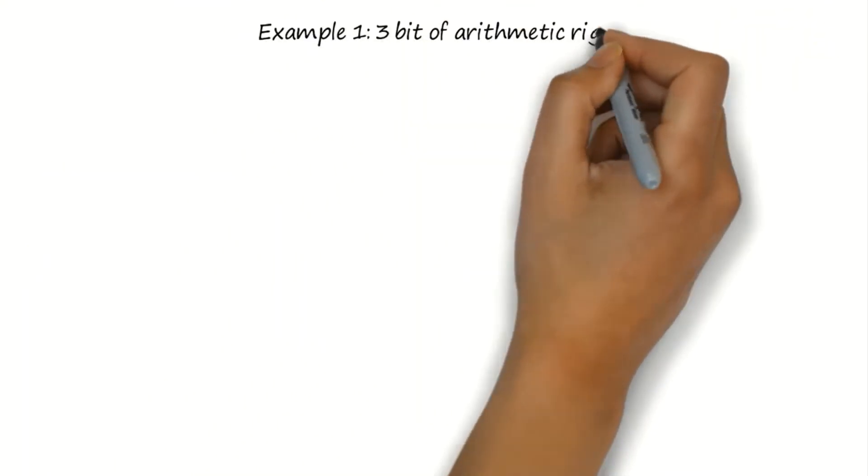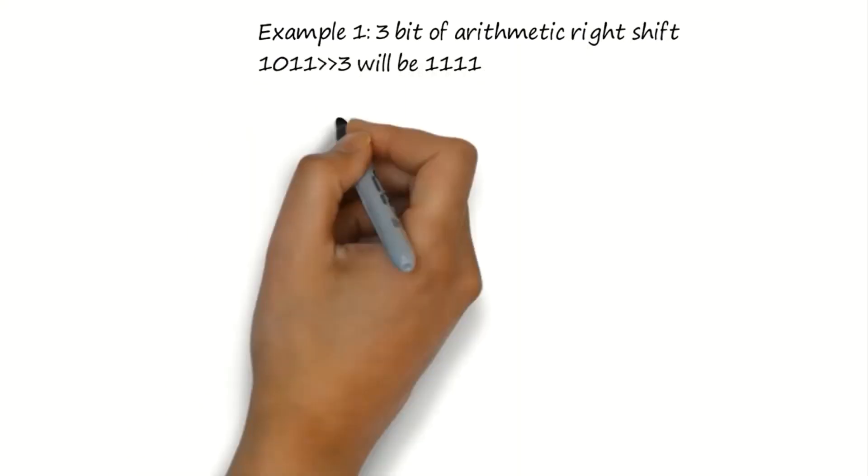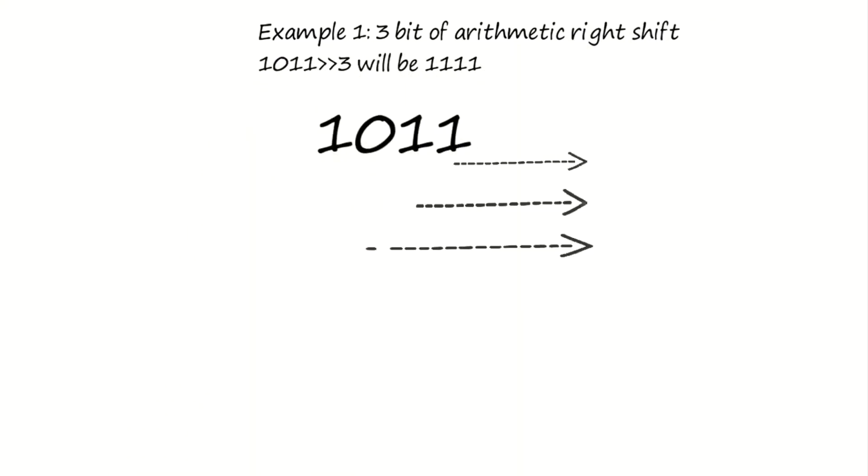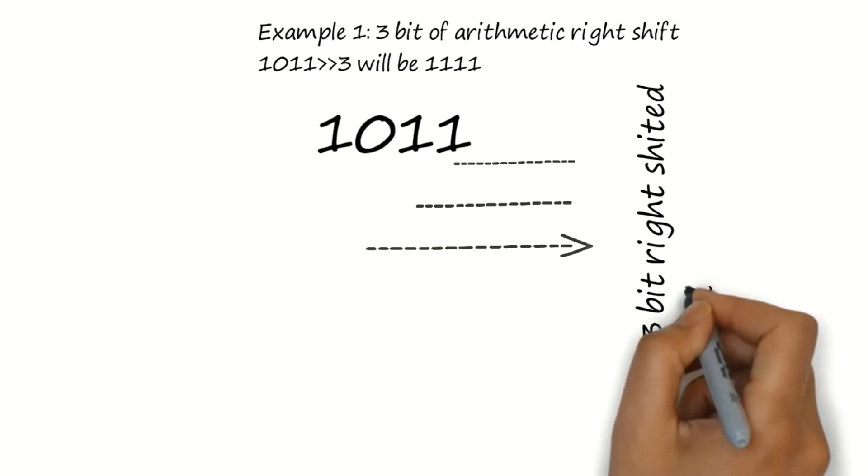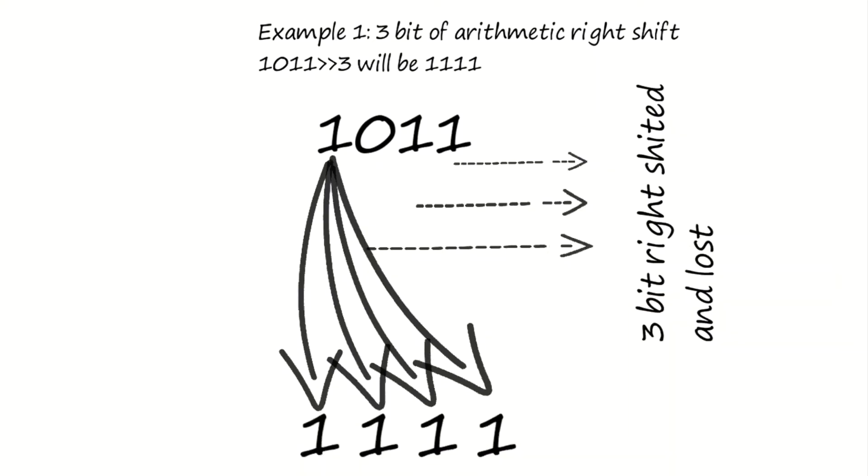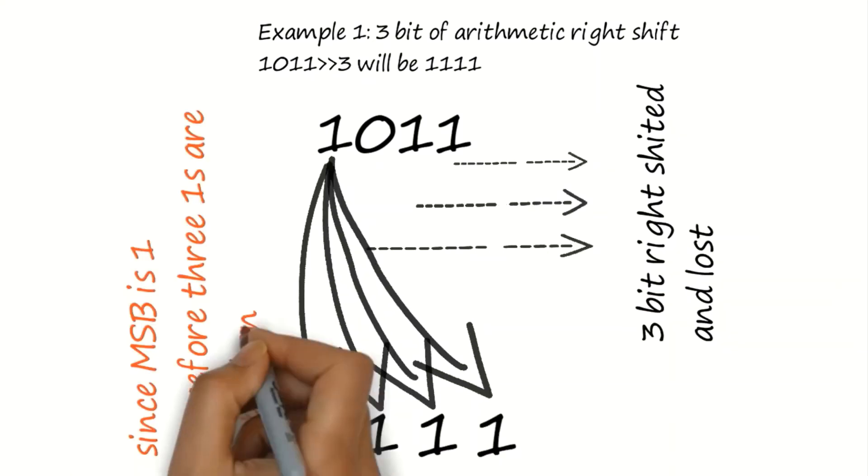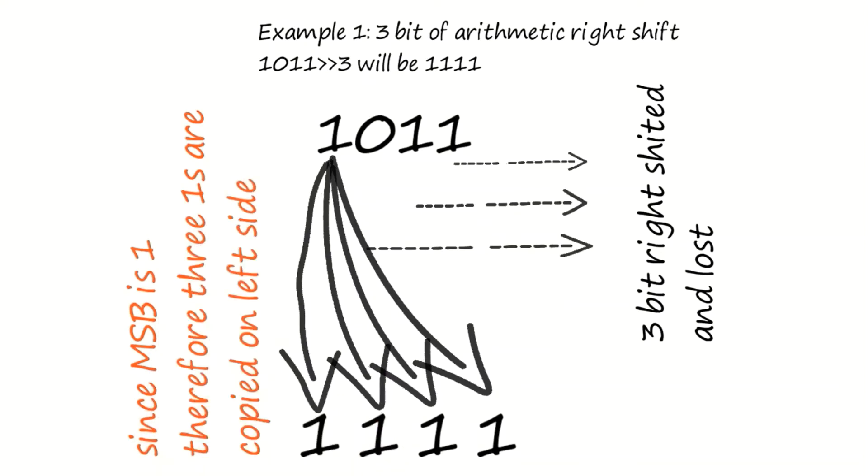Consider example 1 where 1011 will be shifted 3 bits right. After 3-bit right shift, since MSB was 1, all the left 3 bits will be replaced by 1.